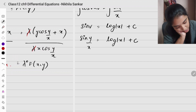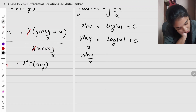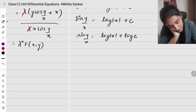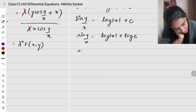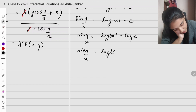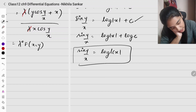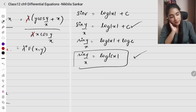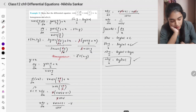Note that c is a constant, so we can also write c as log c. Using log a plus log b equals log ab, this can also be written as sin(y/x) equals log|cx|. Both forms are correct.